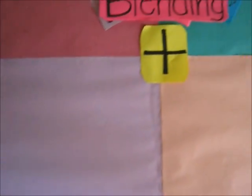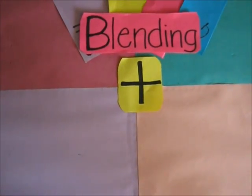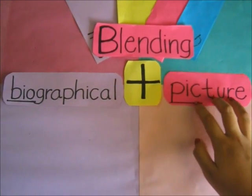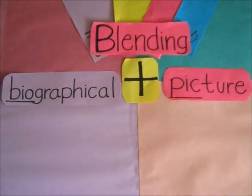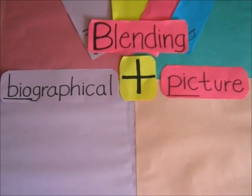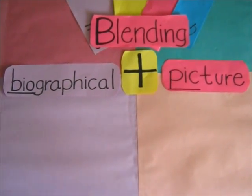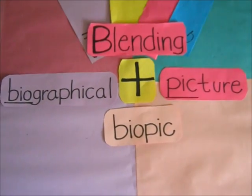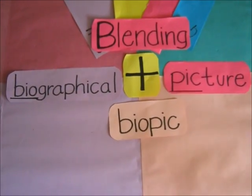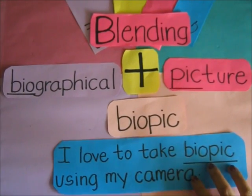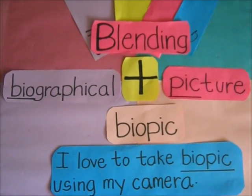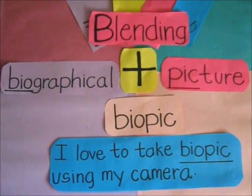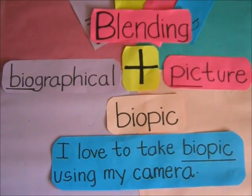Here we have another example of blending: 'biographical' plus 'pictures.' We will only get the first three letters of both words to form the new word 'biopic.' Let's use 'biopic' in a sentence. For example: 'I love to take biopics using my camera.' Notice that in blending, it does not follow any particular rule in blending words.